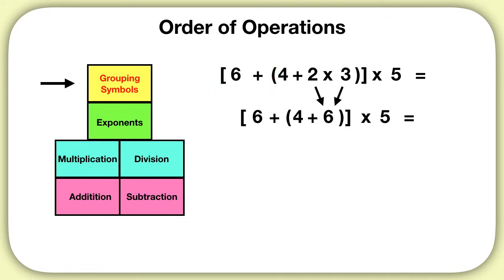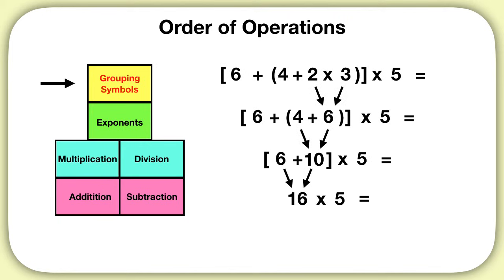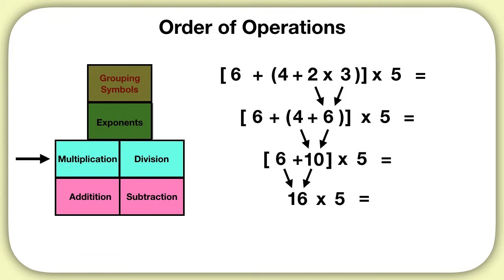Then we bring down the rest of our equation. We still have our brackets, but inside we also have the parentheses. Those get solved next. 4 plus 6 is 10. We bring down the rest of our equation, and now we can solve the brackets. 6 plus 10 is 16. There are no more grouping symbols, no more exponents, so now we multiply. 16 times 5 is 80.